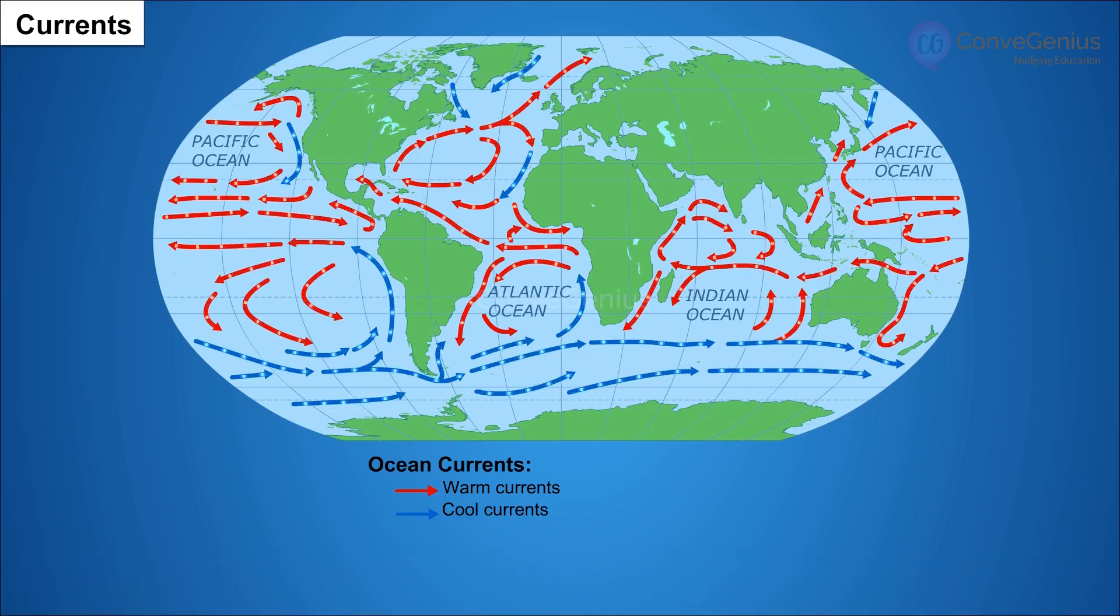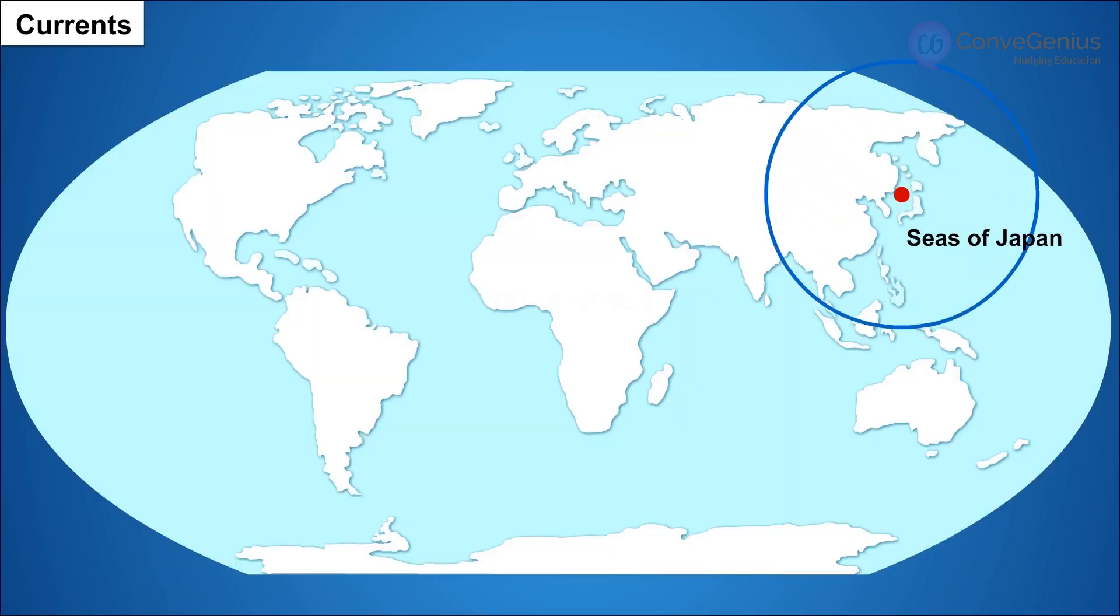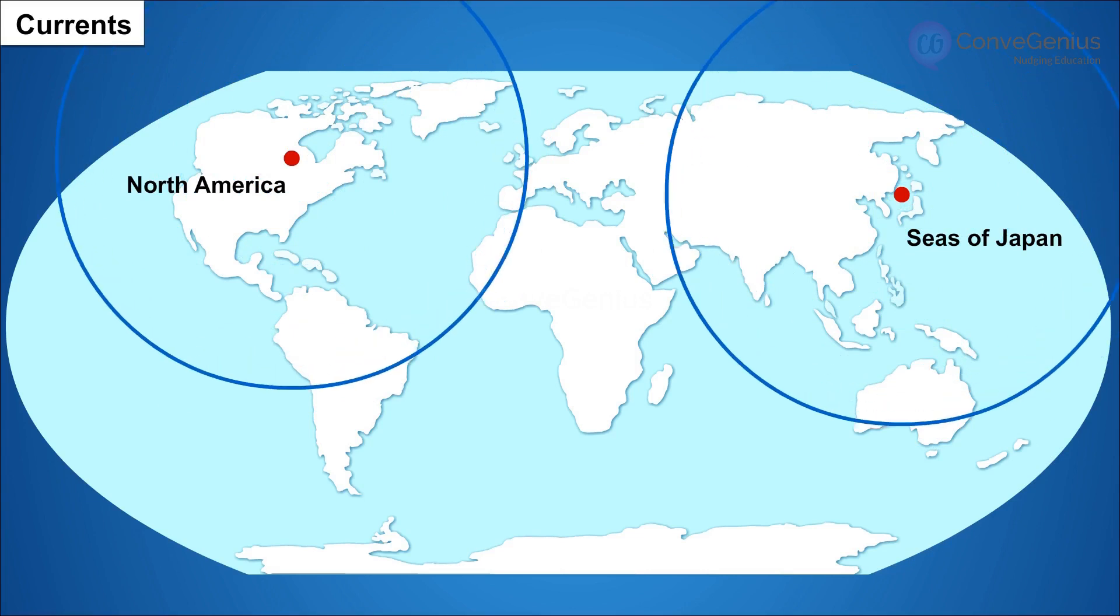There are spots in the ocean that have both warm and cold currents, such as seas of Japan and around the east coast of North America. These provide some of the best fishing grounds in the world. However, they are usually foggy and make it difficult for navigation.